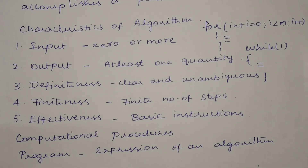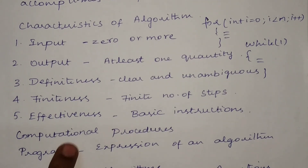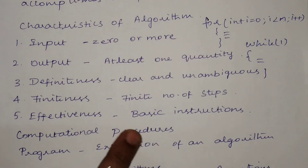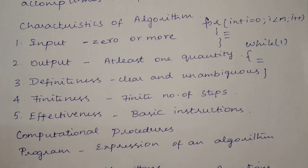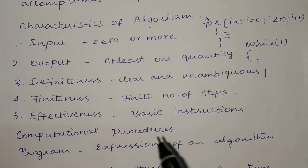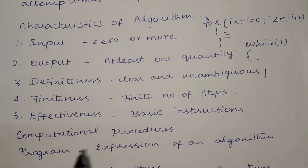One more term to explain is Computational Procedures. If you design an algorithm that satisfies the two criteria of definiteness and effectiveness, such algorithms are called computational procedures. An example is how an operating system runs programs — it executes each program one by one, never truly terminating as it waits for new programs entering the ready queue. Thank you.